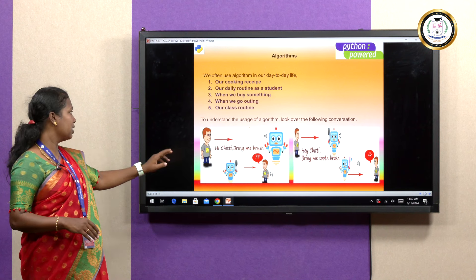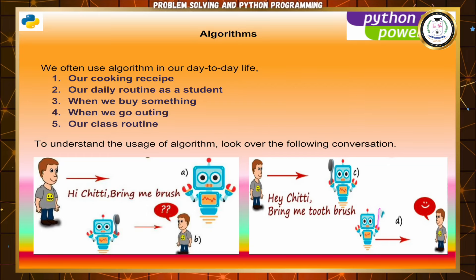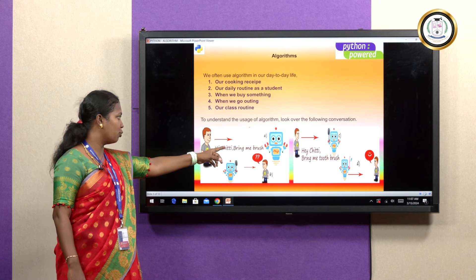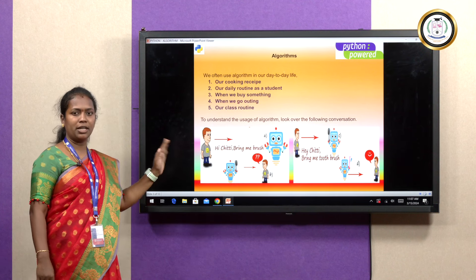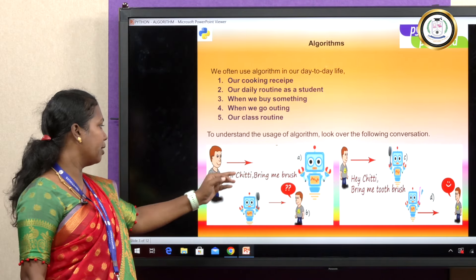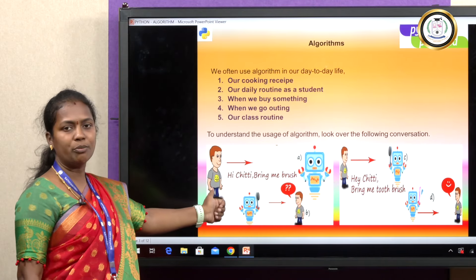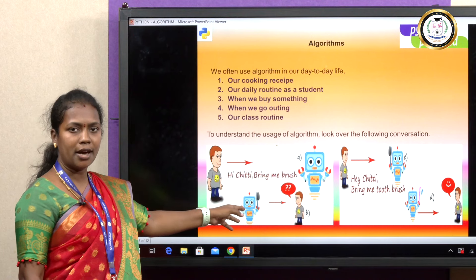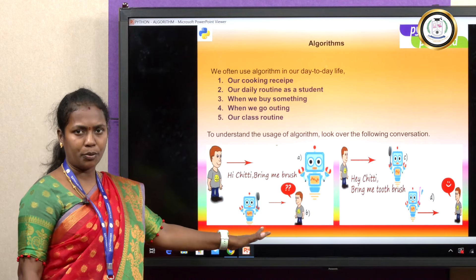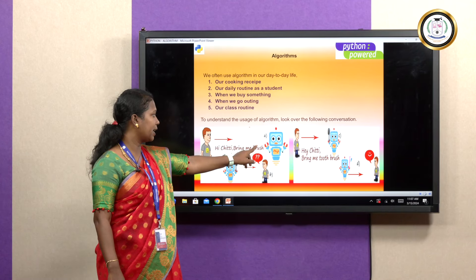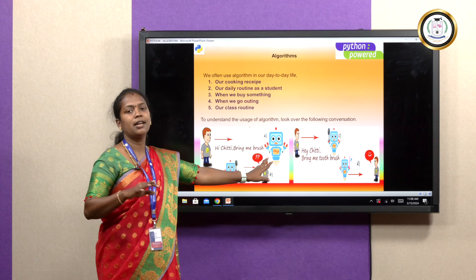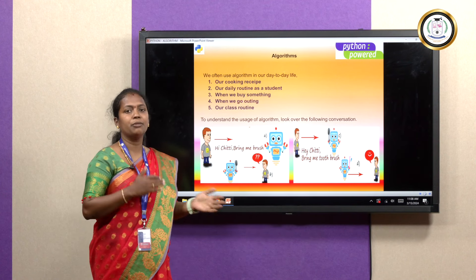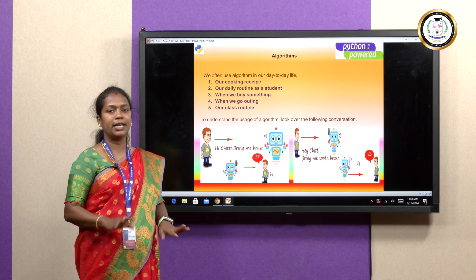To understand the usage of an algorithm, look at the following conversation. This is Chitty, representing a computer robot. Someone says: 'Hi Chitty, bring me a brush.' Chitty was instructed, but it will bring a normal brush. If you give a clear instruction, then the robot brings the proper brush. When corrected to 'Hi Chitty, bring me a toothbrush,' it brings the correct brush. This is like a computer program — if you give the algorithm properly, the computer will understand easily.